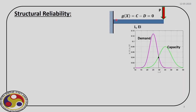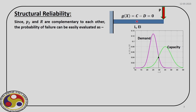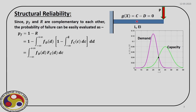Taking the example of a cantilever beam with a point load at the free end, we can define capacity from the cross-section and material property, and demand from displacement, stress, or any internal force. We then estimate reliability and also the probability of failure, which is 1 minus reliability. The expression for probability of failure simplifies to: the integral from minus infinity to plus infinity of fd(D) times Fc(D) dc. To estimate this, we first need to define the underlying PDFs for capacity and demand.